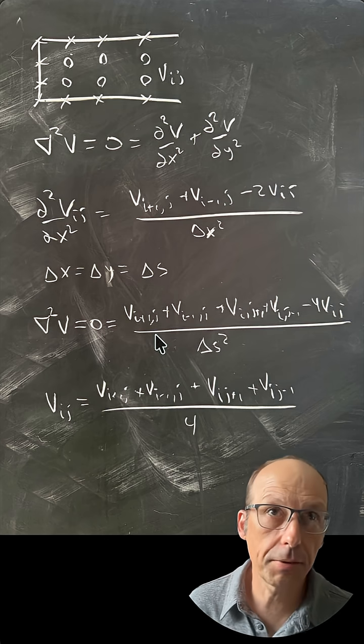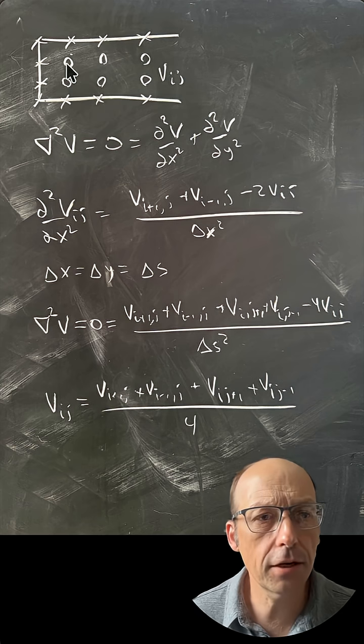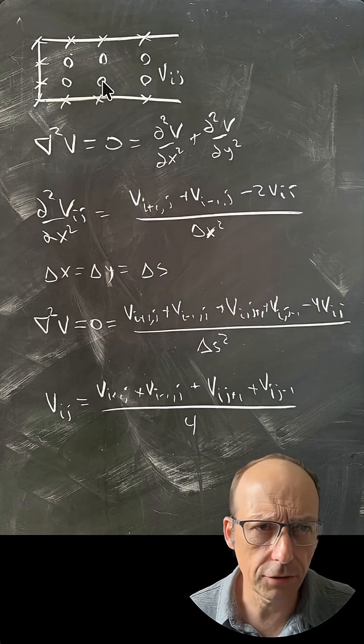How do you find the electric potential with the finite difference method? Imagine that we have some region over here with boundary conditions and we want to find the potential everywhere inside this region.